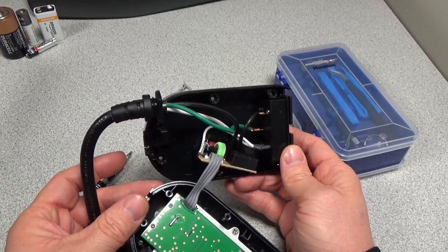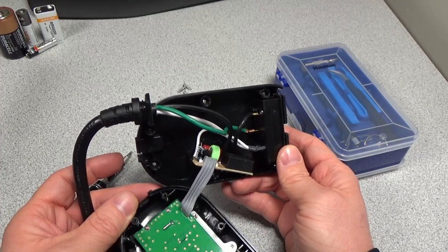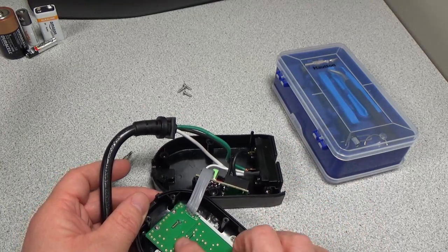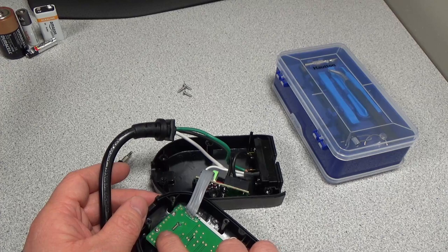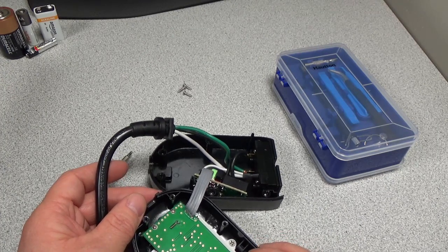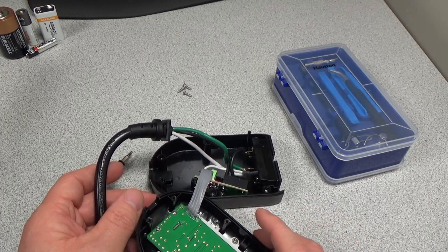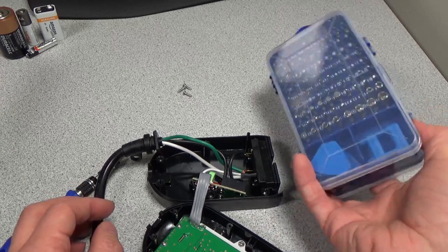It looks like we got a whole bunch more screws to take out before we get into that. There's not going to be much on this board. I can see our clock crystal here which is going to be a 32.768 kilohertz crystal, and it's probably just going to be a blob on the other side of this.